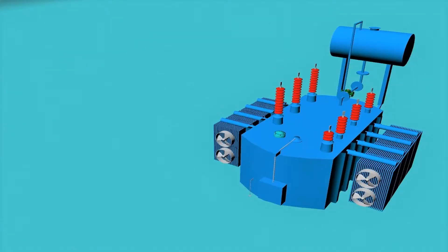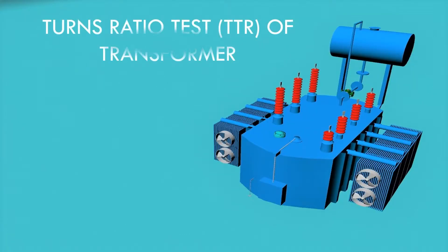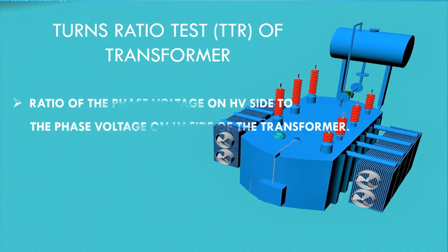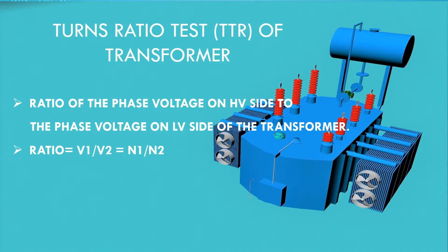Today we will explain the turns ratio test of the transformer, which is commonly referred to as TTR. TTR is the ratio of the phase voltage on the HV side of the transformer to the phase voltage on the LV side of the transformer. Basically, TTR is equal to V1 divided by V2.